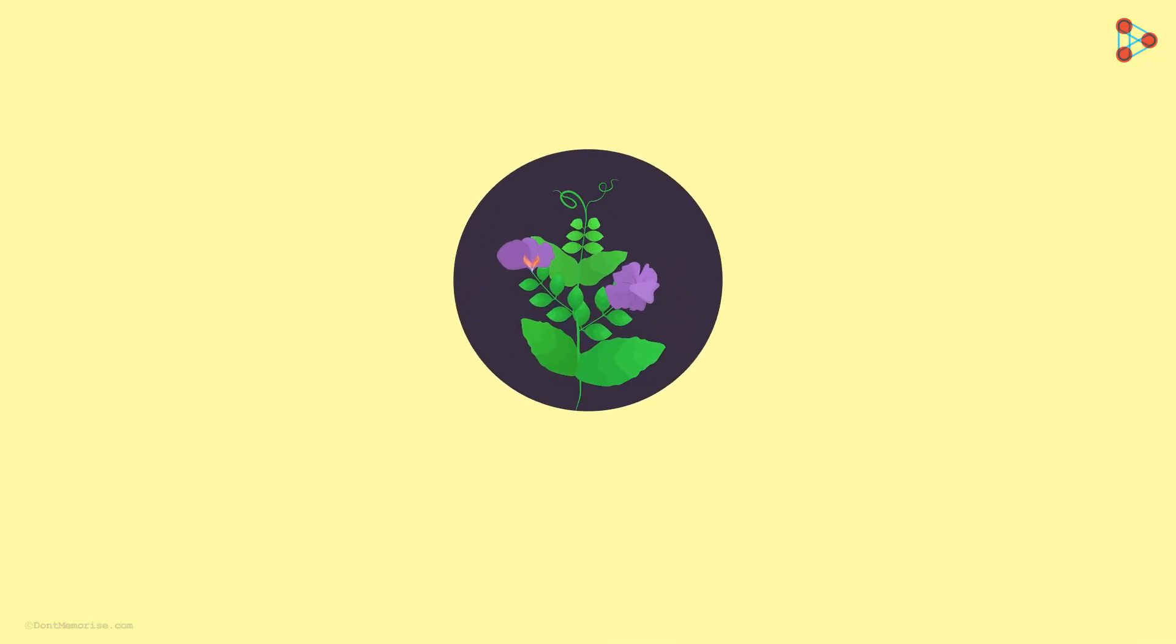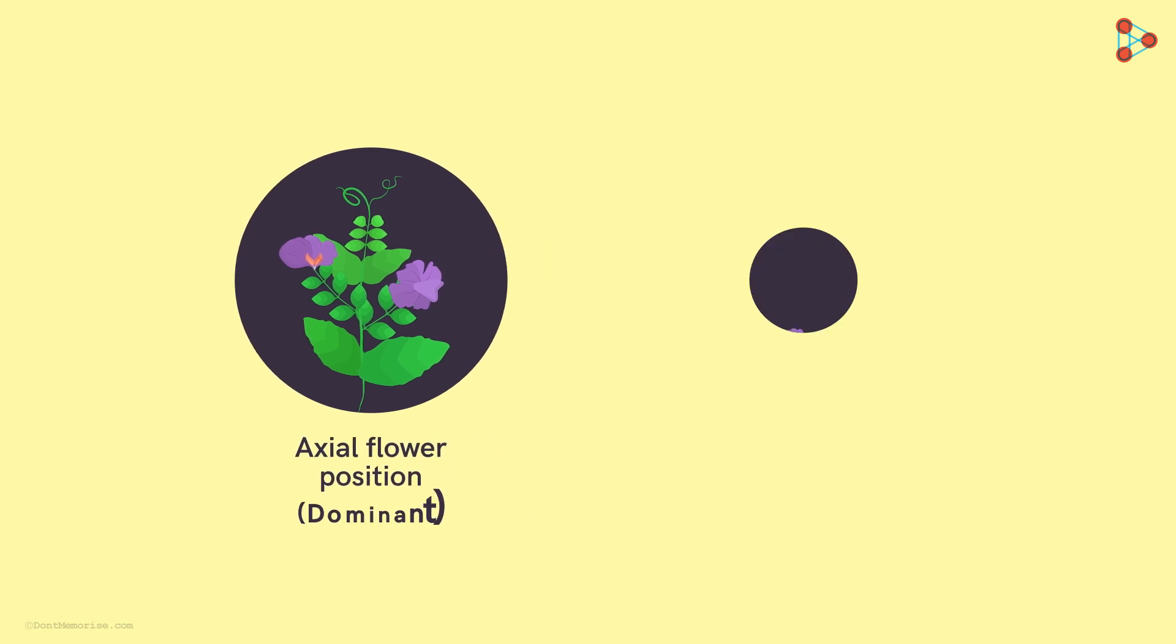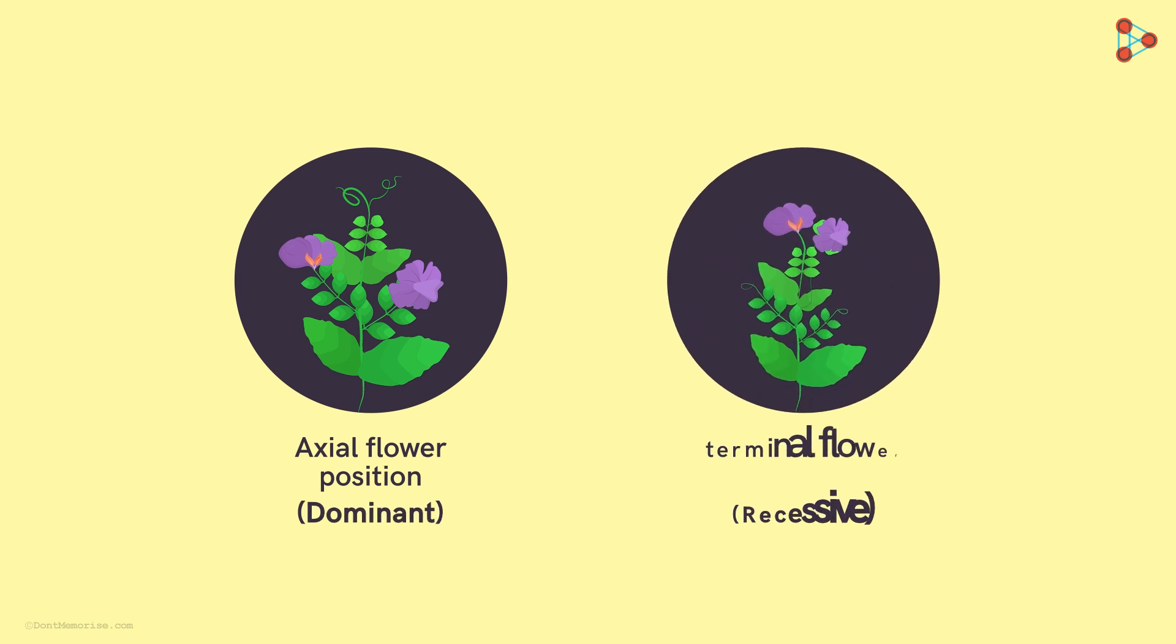To begin with, let's imagine we have this plant with axial flowers. We know that the axial flower position trait is dominant over the recessive trait of the terminal flower position.